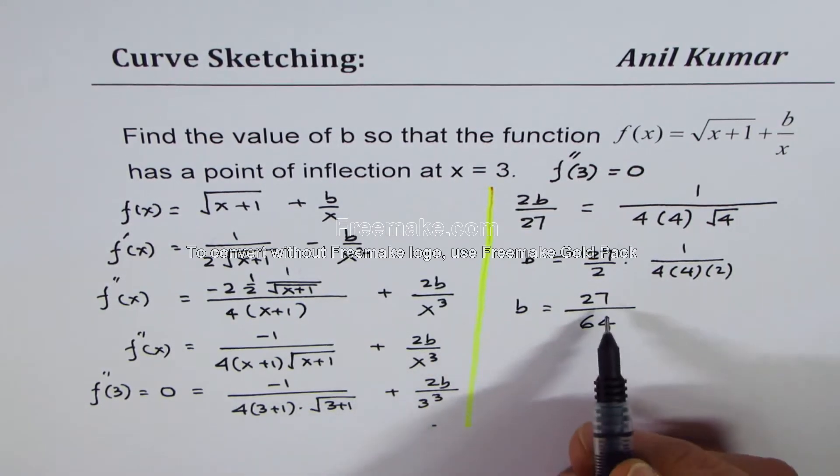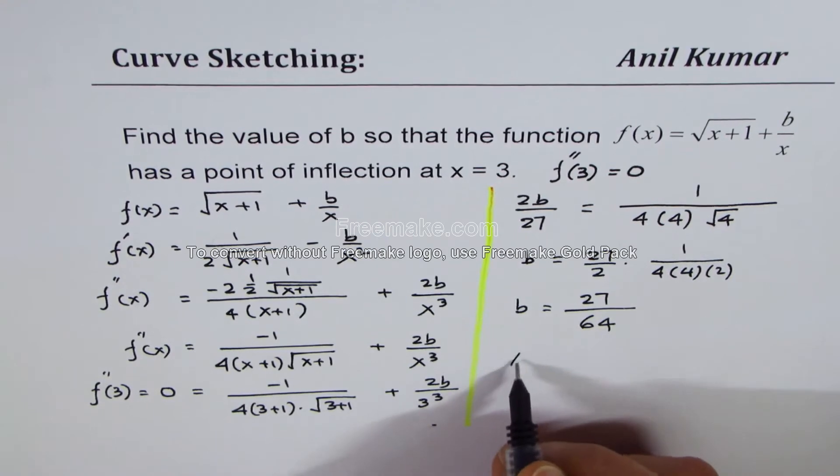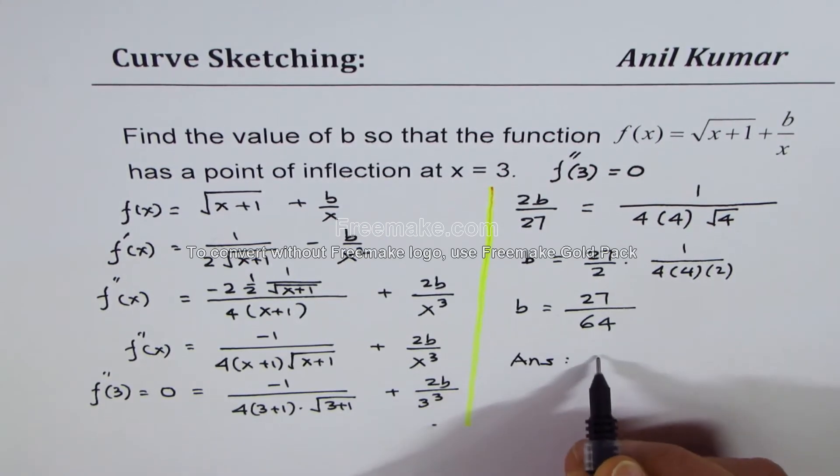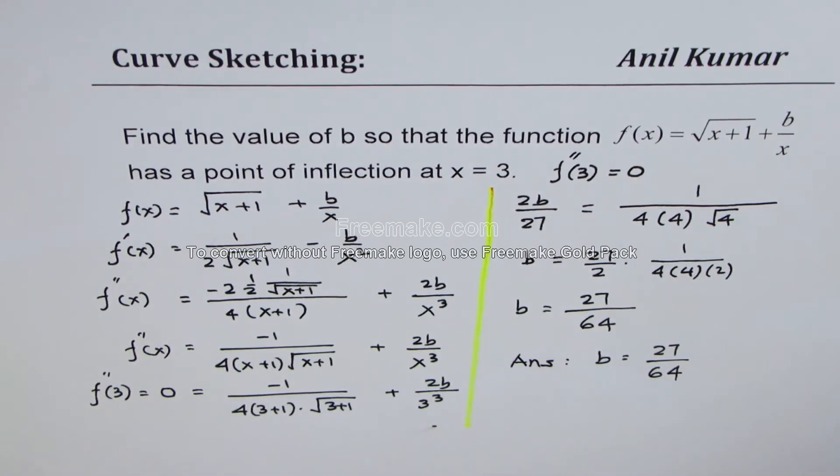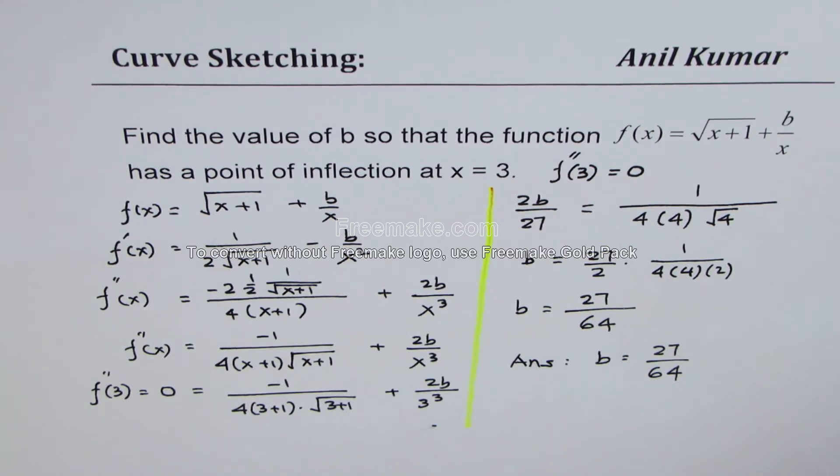So we get b equals 27 over 64. That is our answer: b should be equal to 27 over 64 for the point of inflection to be at x equals 3. That is how we could actually solve such a question. I hope that helps, thanks and all the best.